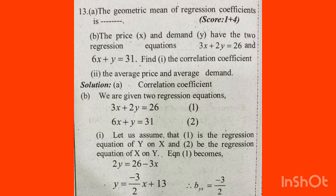The next question: price x and demand y have two regression equations. 3x plus 2y is equal to 26, and 6x plus y is equal to 31. If you want to find the correlation coefficient, the average price, and the average demand, we have to be able to solve this question using the regression equations.